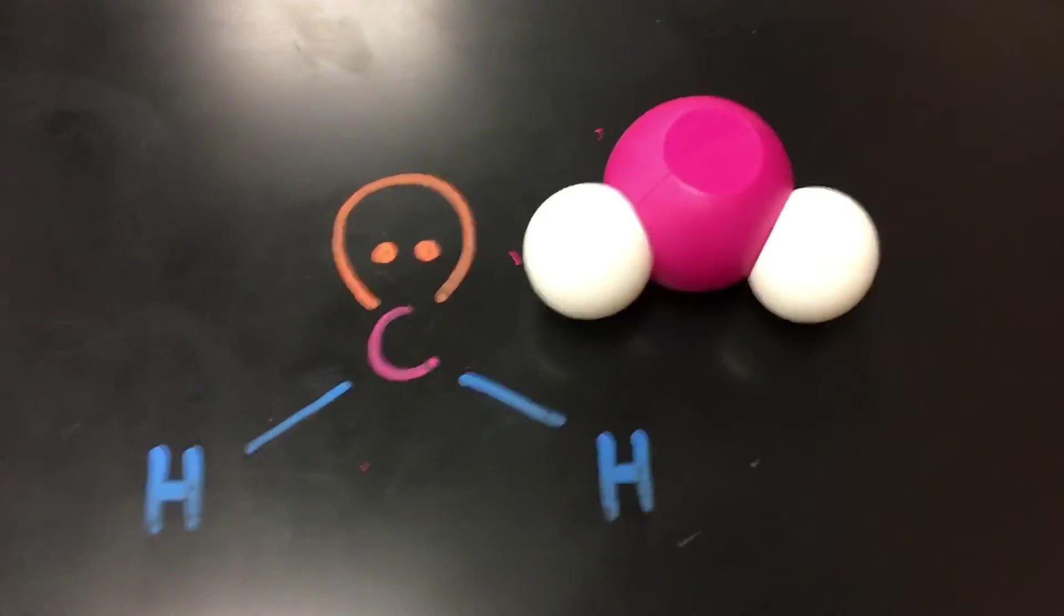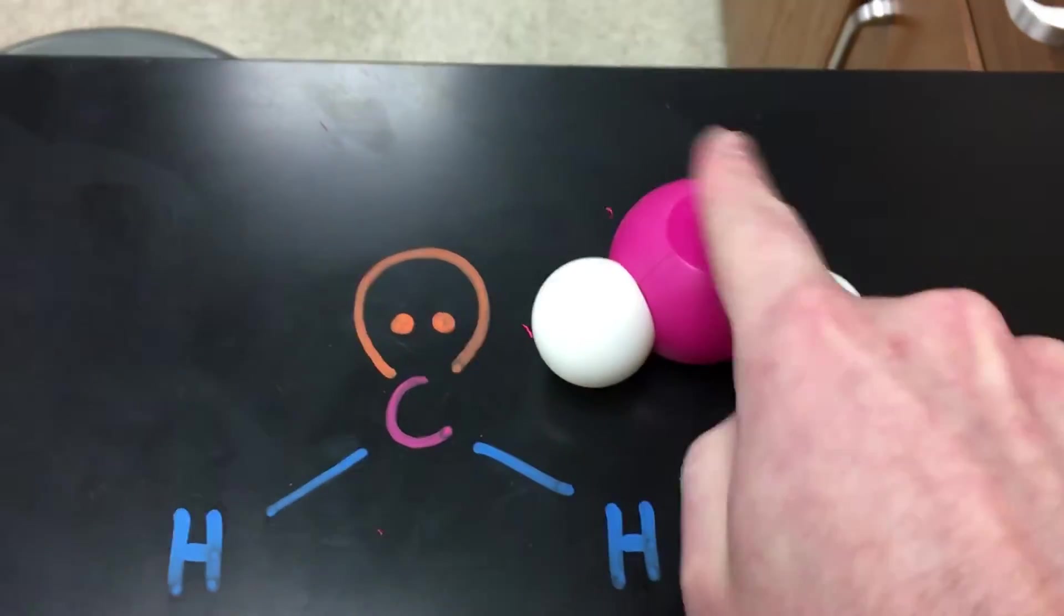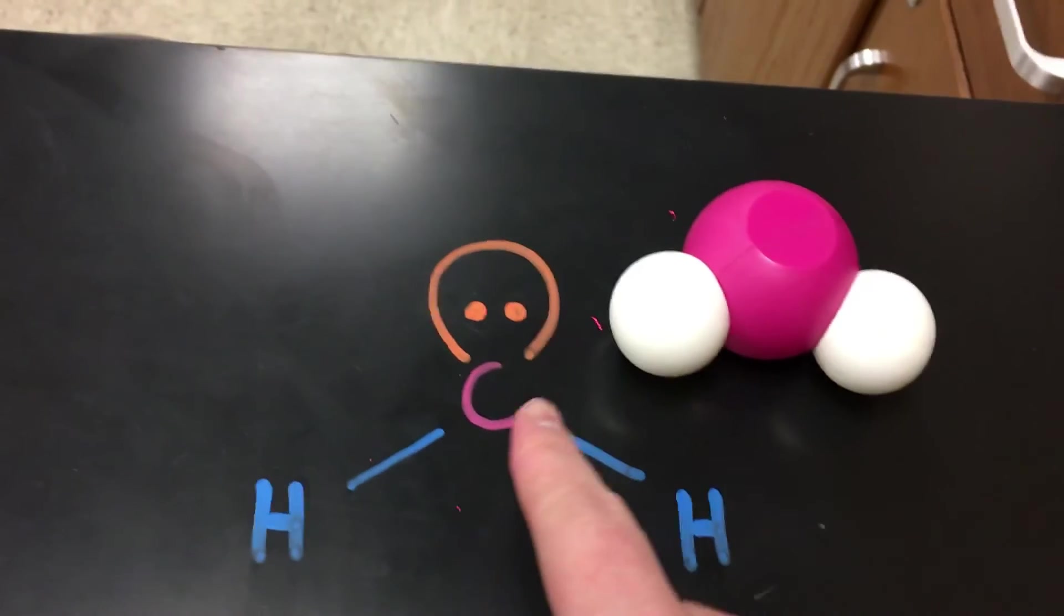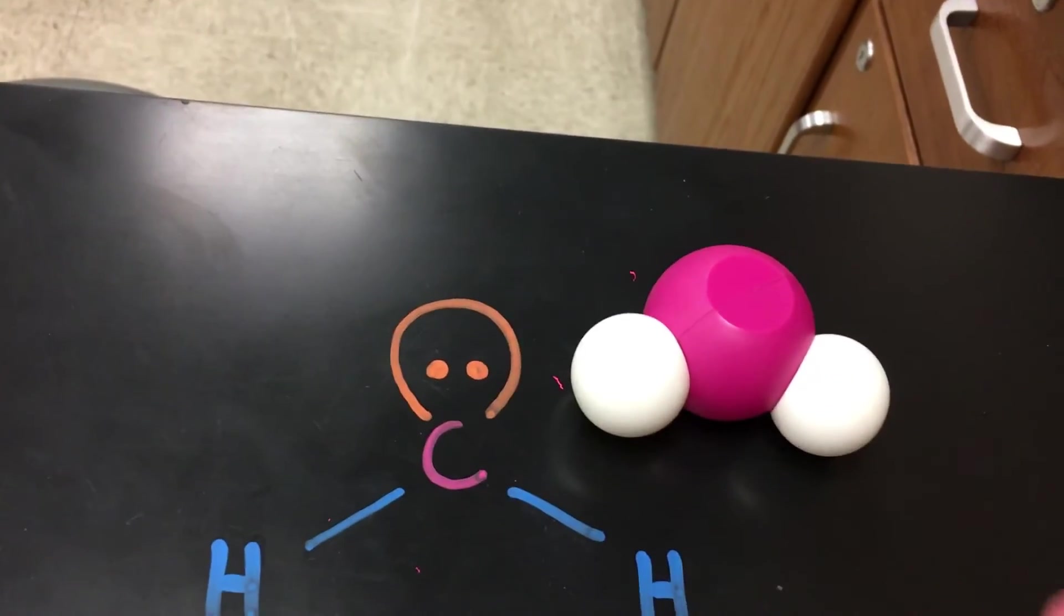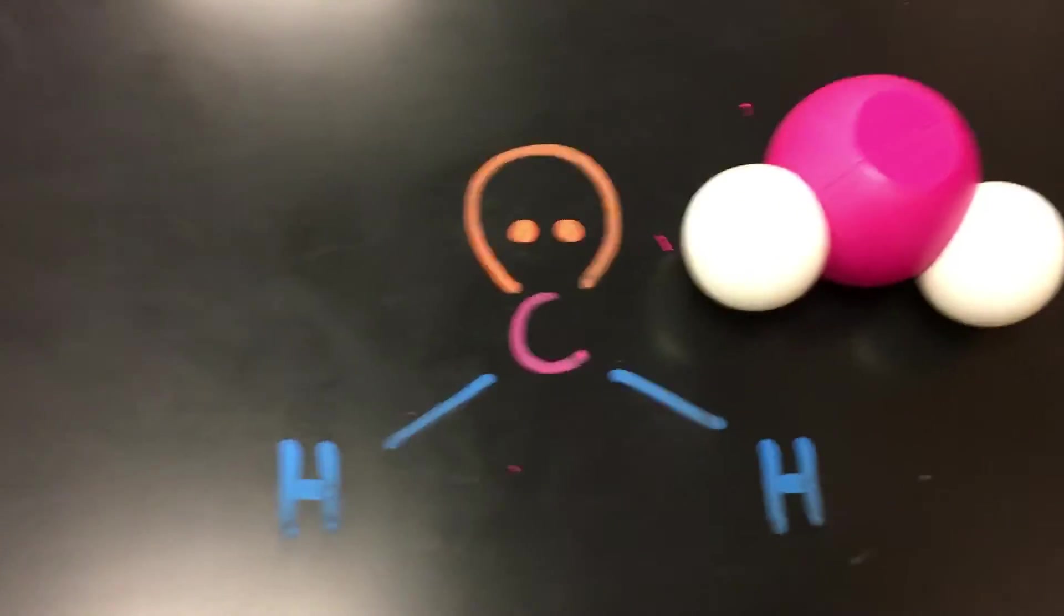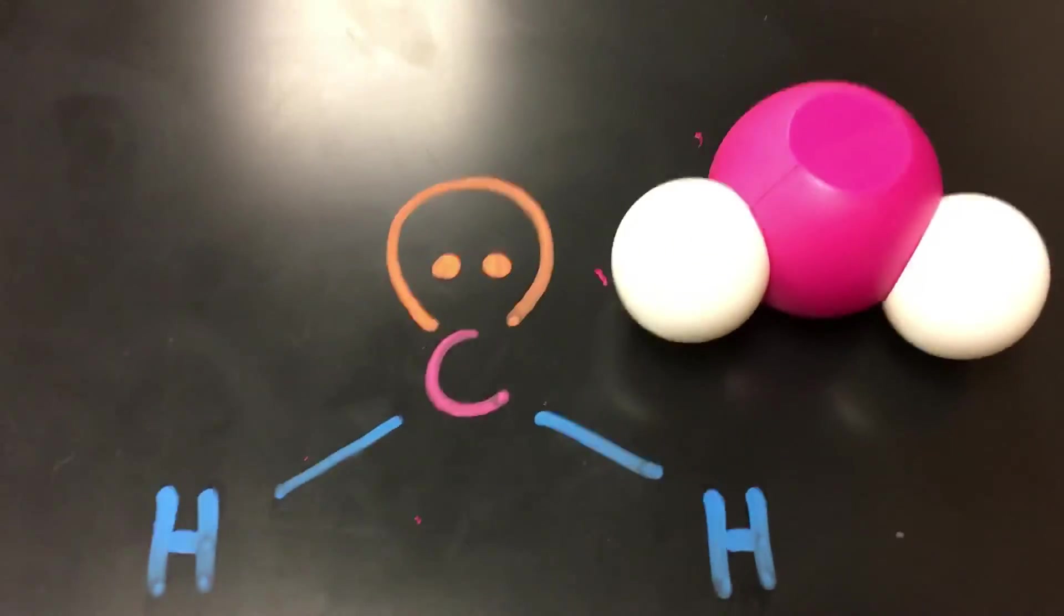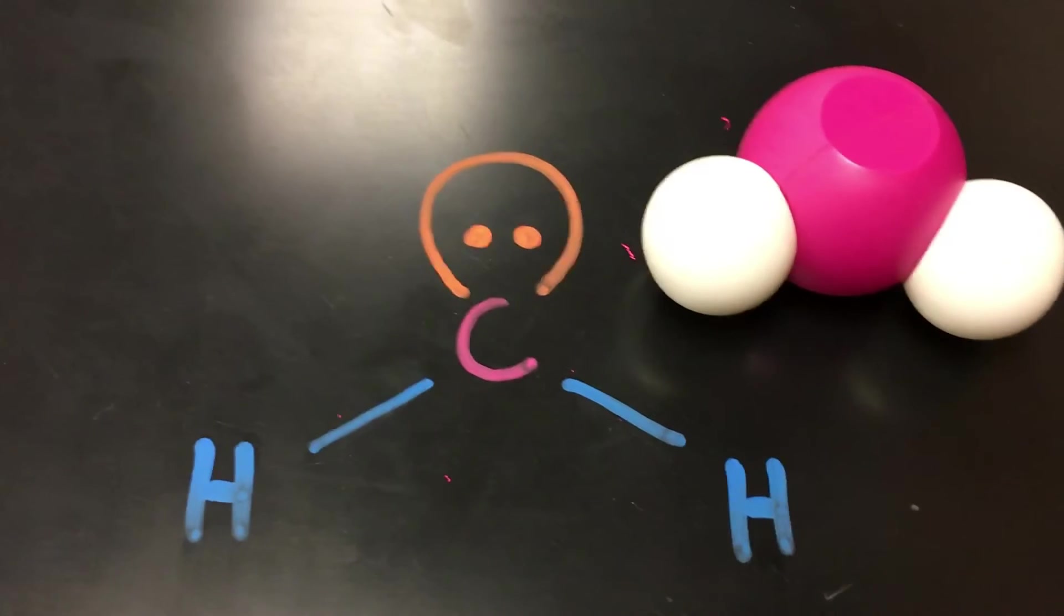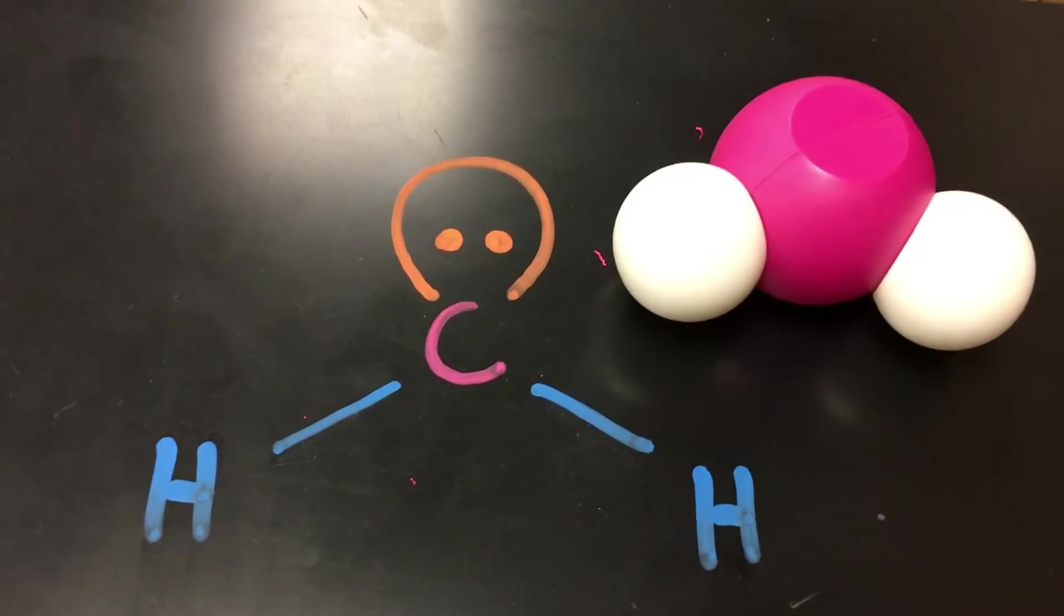So the question is why do we end up with a bent shape even though there's nothing over here to kind of push these away? Well there is. This lone pair of electrons is there and it's a pair of electrons. They're going to repel just the same as the electrons in an atom or in a covalent bond being shared. So even though it doesn't take up physical space as an atom, this area where we're going to find electrons is just as likely to push other groups of electrons away.